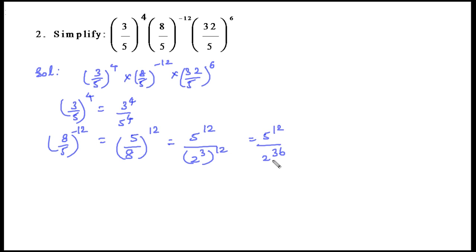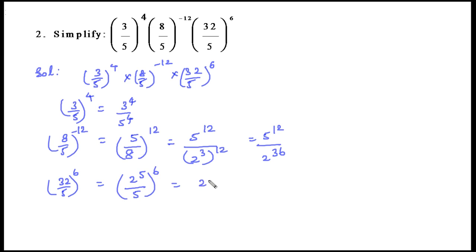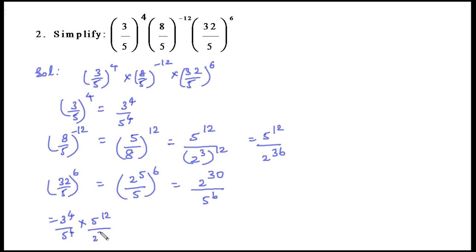For (32/5)^6: since 32 = 2^5, this equals 2^(5×6) / 5^6 = 2^30 / 5^6. Now multiplying all three terms: (3^4 / 5^4) × (5^12 / 2^36) × (2^30 / 5^6). For the 5 powers in the numerator we add: 5^(12), and in the denominator 5^(4+6) = 5^10. For the 2 powers: 2^30 in numerator and 2^36 in denominator, so we subtract.